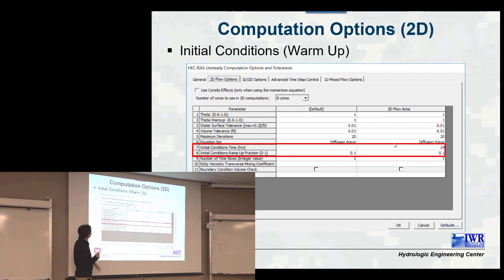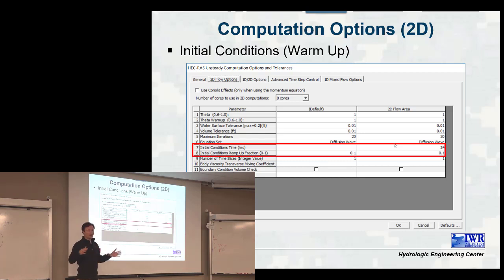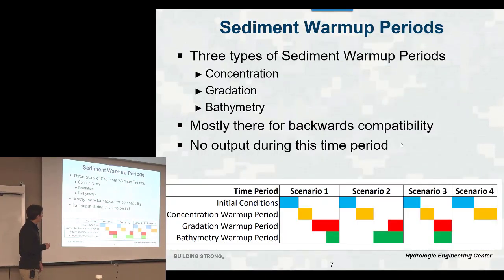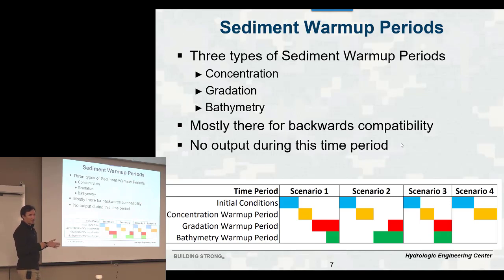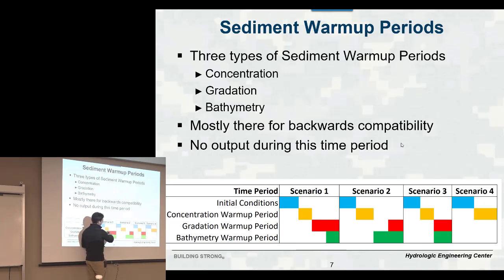The initial conditions time runs at the beginning of the simulation — this is negative time, before the warmup. The initial conditions period runs each 2D area by itself, initializing each 2D area. The warmup then runs all the 2D areas, and 1D/2D combined, initializing that. For sediment, there are three types of warmup periods: concentration, gradation, and bathymetry. Depending on the value you choose for each, you can be in a different scenario. The hydraulic warmup runs first, then concentration, and the gradation and bathymetry ones run together. By the end of the initial conditions period, concentration, bathymetry, and gradation will all be turned on.